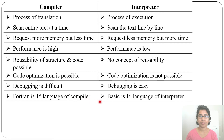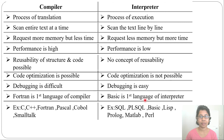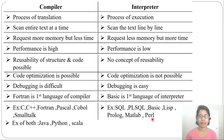FORTRAN is the first language for compiler, while BASIC is the first language for interpreter. Examples of compilers include C, C++, FORTRAN, Pascal, and Smalltalk. Examples of interpreters include SQL, PL/SQL, BASIC, LISP, Prolog, MATLAB, and Perl.